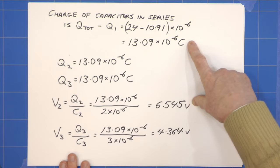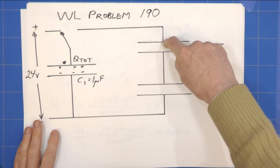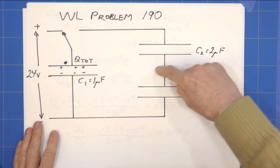13.09 microcoulombs. Now that charge on that capacitor is going to be the same as the charge on that capacitor. There's no way charge is getting in here, it can only come in this way.